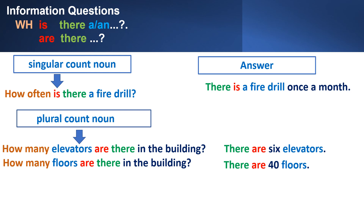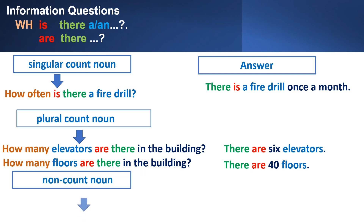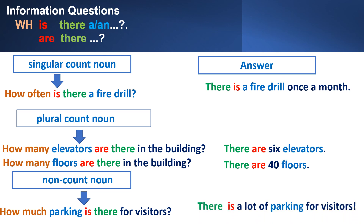Remember, you need to put the noun after how many, because we need to know what you are asking about. How many elevators? How many floors? How many swimming pools are there? With a non-count noun, the verb is is: How much parking is there for visitors? There is a lot of parking for visitors. Remember, all non-count nouns are singular, so the verb to be is is.